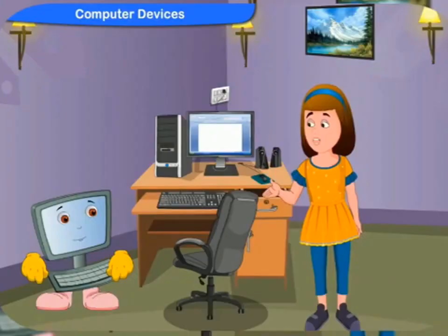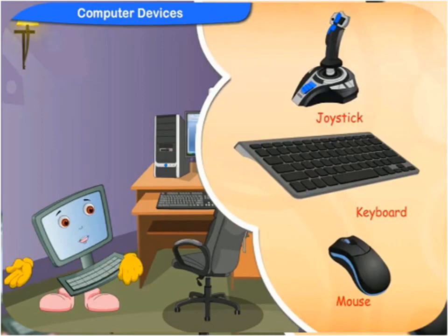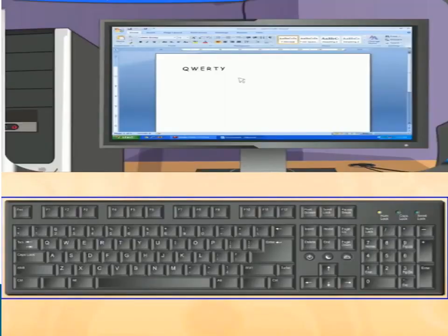What are input devices? Devices that feed data into your computer are called input devices. What kind of devices feed data into your computer? The keyboard, mouse, and joysticks are all input devices. By pressing the keys of the keyboard, we tell the computer what to do, and the letters and numbers appear on the screen. So this keyboard is an input device.